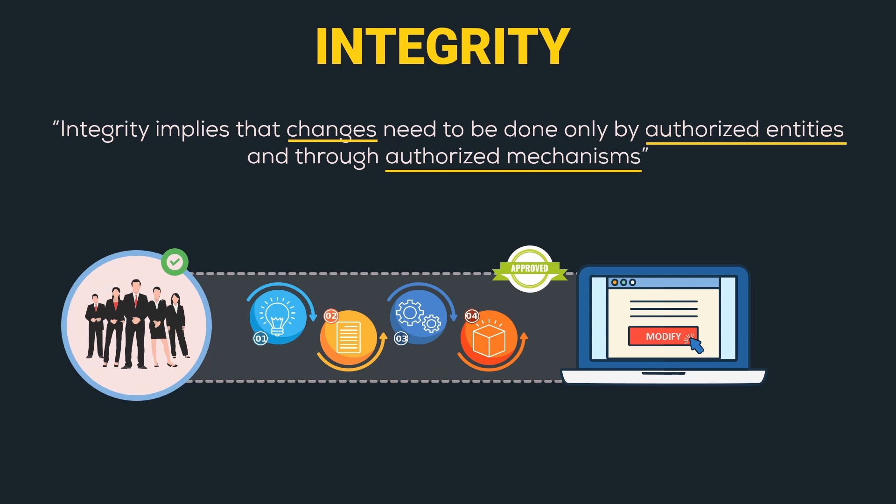Even if they have the authority, they must follow authorized mechanisms to perform the changes. For example, to confirm any changes in an organization, the CEO must have a proper meeting with all the stakeholders of the company, and only after the approval of the majority of the stakeholders are the changes finally made.